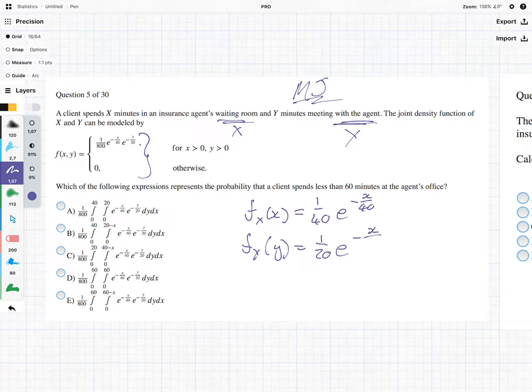Now, the interesting thing is that what we're asked in this question is, which of the following expressions represent the probability that a client spends less than 60 minutes at the agent's office?